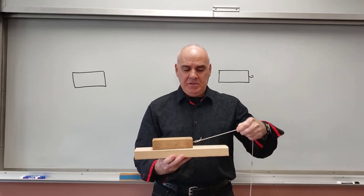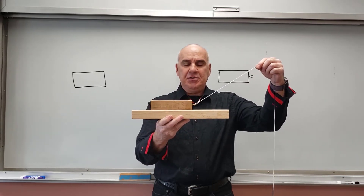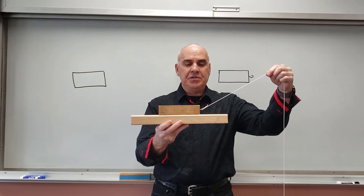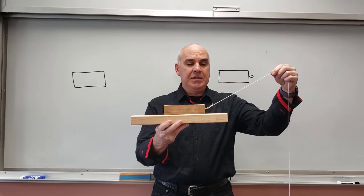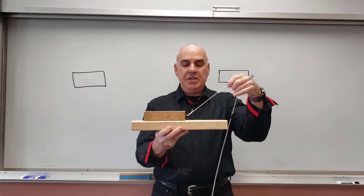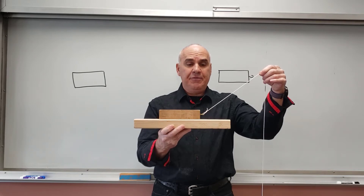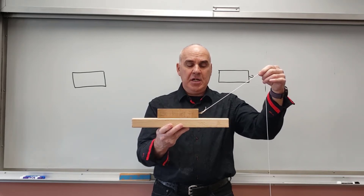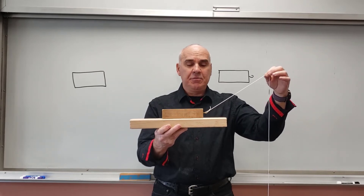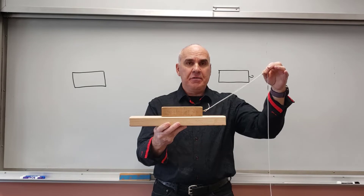I want to clarify a couple of things. First, I want to talk about tensions. I've got a block on top of my 2x4 and I'm holding a string attached to the block. When I pull that block with the string, notice the string is not parallel to the 2x4 — it could be, but it doesn't have to be. In this case it's up and to the right, and so I would draw my force vector up and to the right. It's always along the direction of the string.